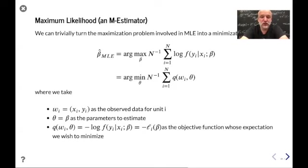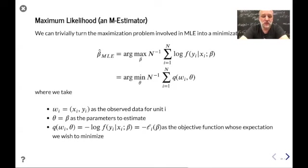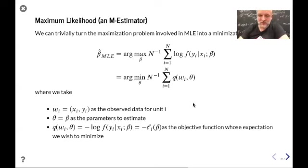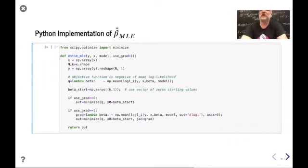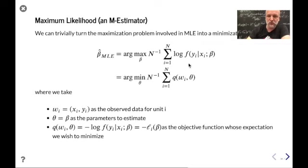We specify Q as the negative of the log likelihood contribution, where the data observation W is (Y, X) and the parameters theta are beta. So we maximize the log likelihood or equivalently minimize the negative log likelihood. Now we move to implementation. We already coded up the likelihood function — a function that returns a vector of all the log likelihood contributions. We want to maximize the average, or equivalently minimize the negative of that average.